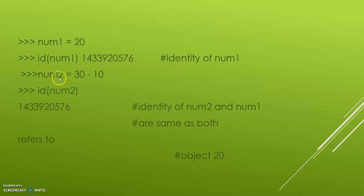We have another variable num2 and the value is 30 minus 10. And the ID of this num2 is 1433920576. Now, observe and see, the identity of num2 and num1 are the same. And why are they the same?